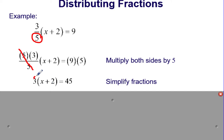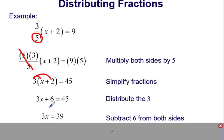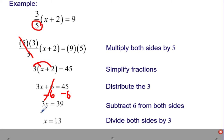We are then going to distribute the 3, which will leave 3x plus 6 equals 45. We have to undo the adding 6, so we'll subtract 6 from both sides, which will leave 3x equals 39. We'll then undo the multiply by 3 by dividing both sides by 3, which leaves our answer x equals 13.